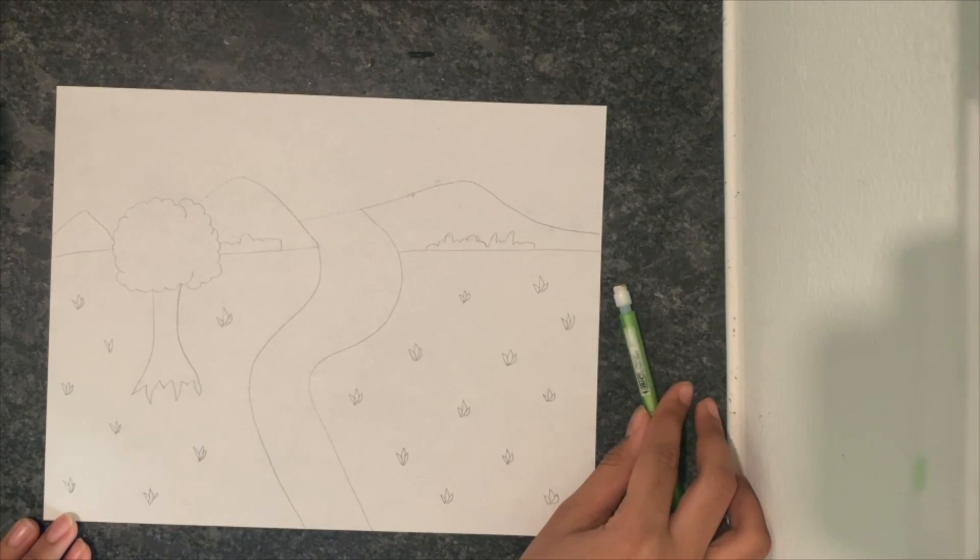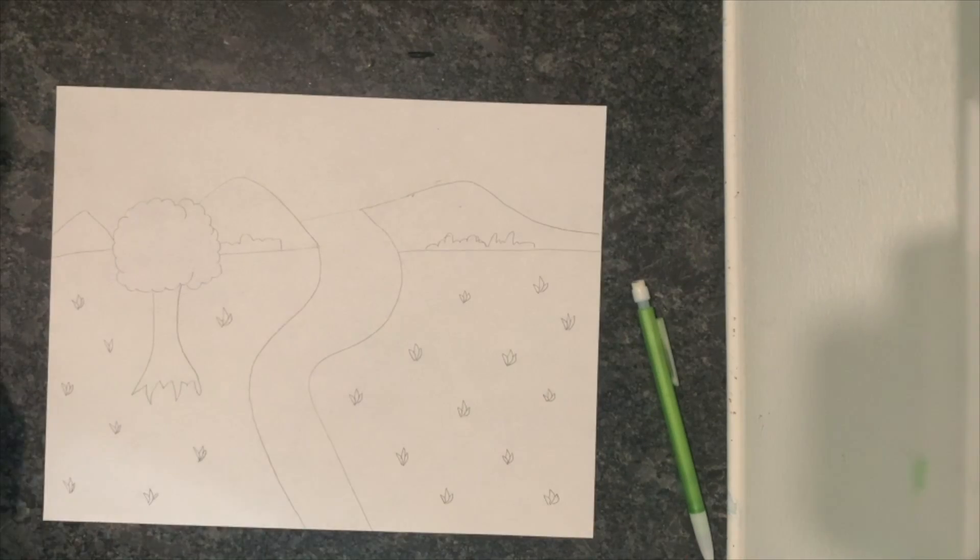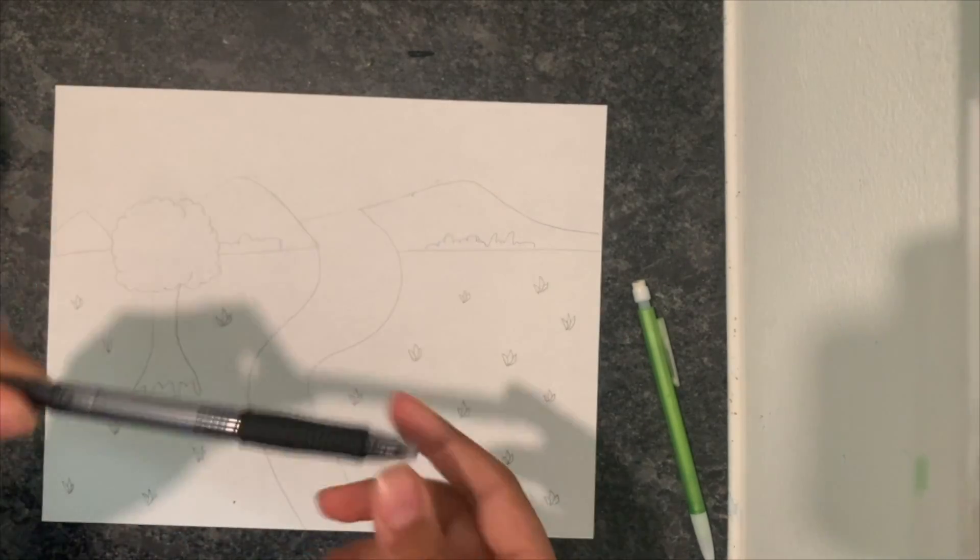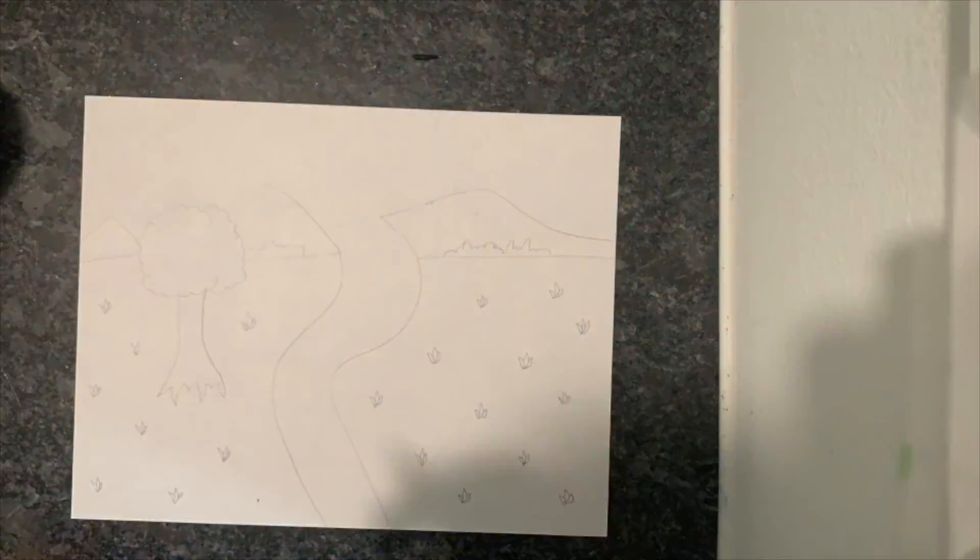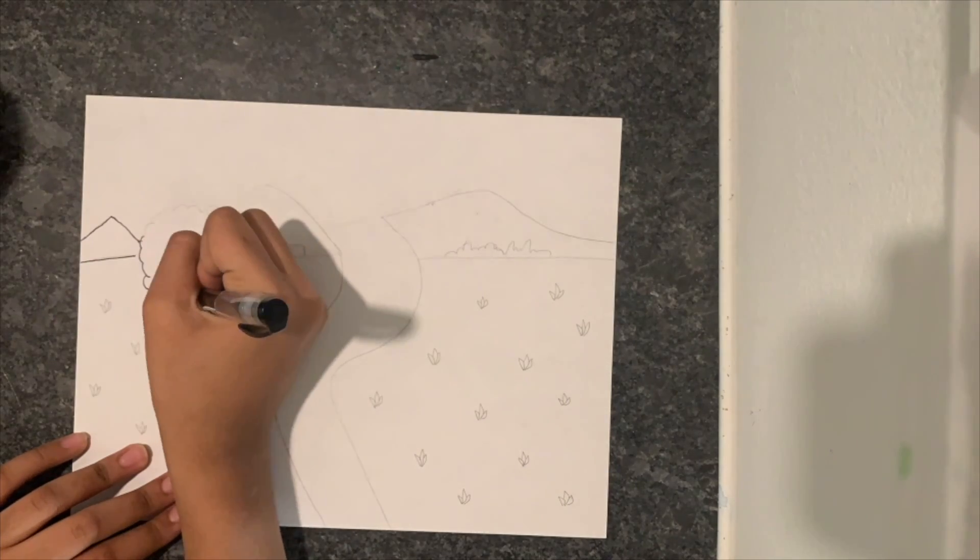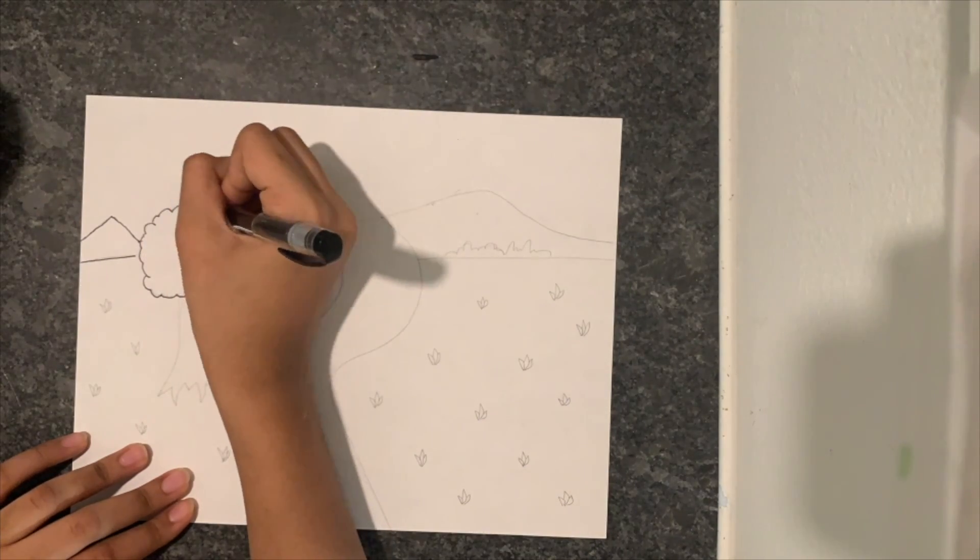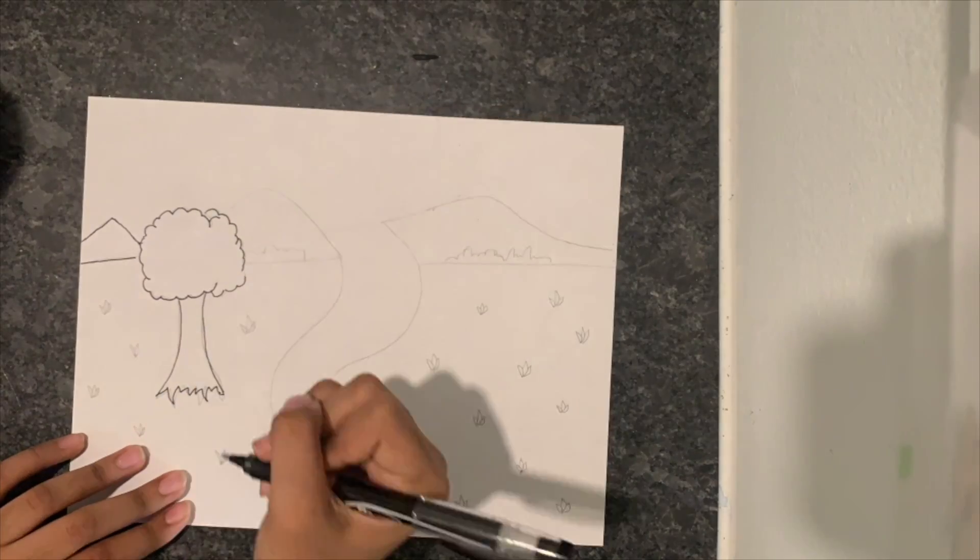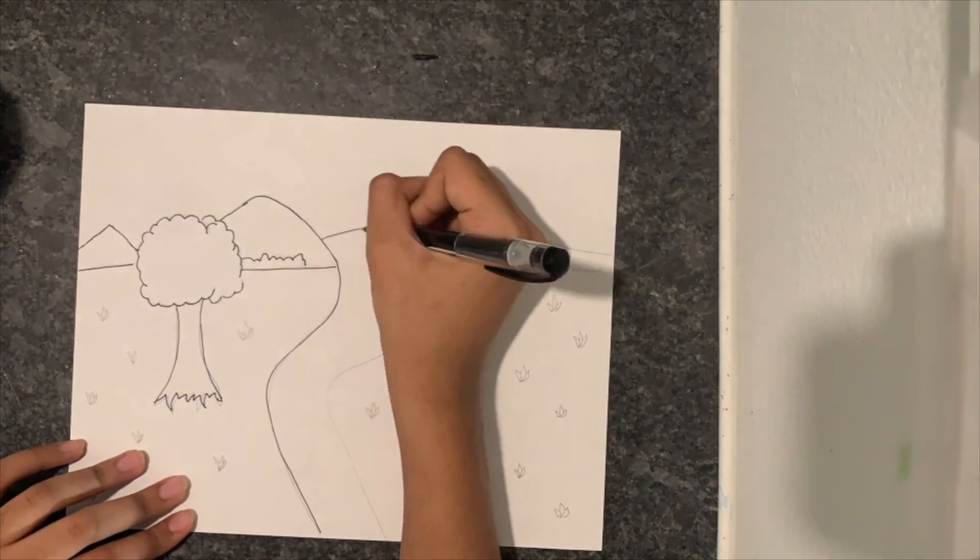Then next up, grab your black pen because you're going to start outlining your painting. When I was outlining my painting I actually forgot to add the sun that is on top of the river, so just make sure you do that when you're penciling in your painting first.